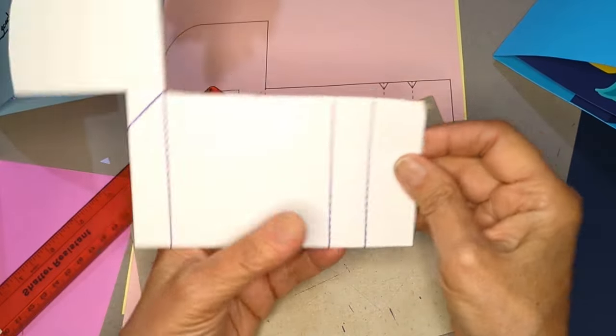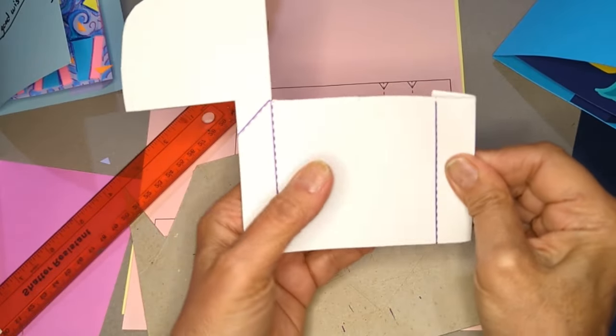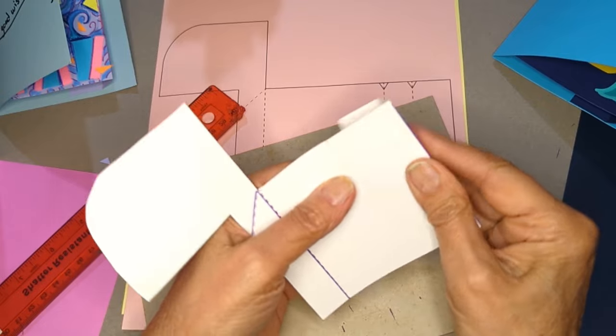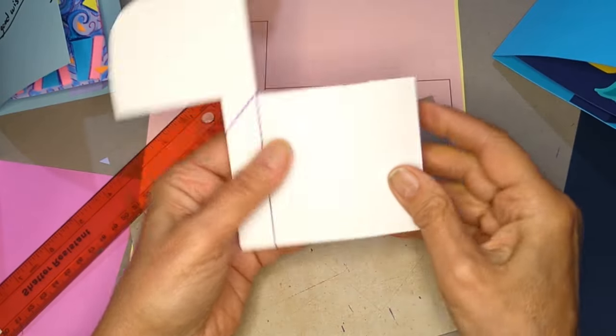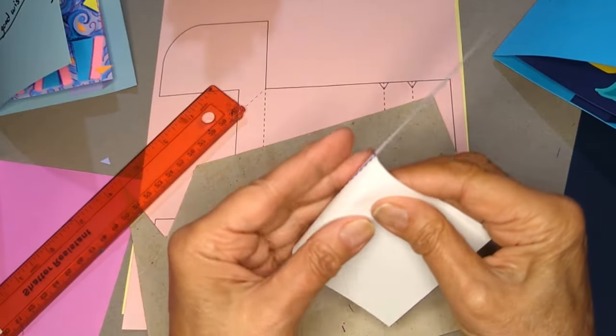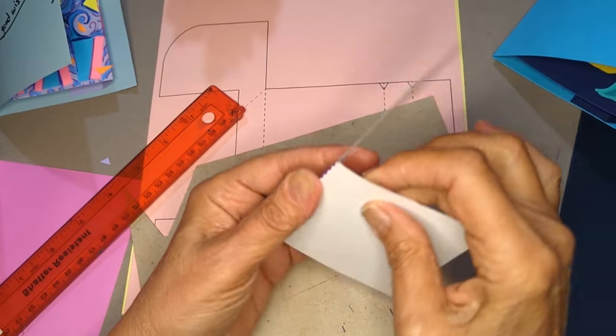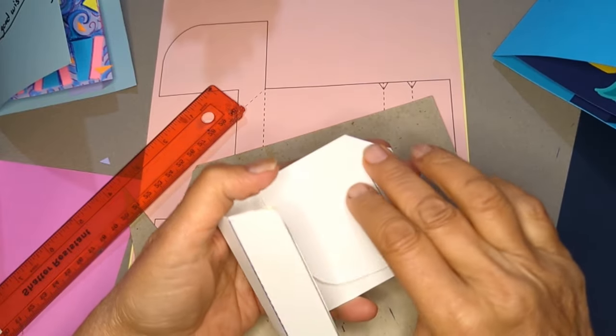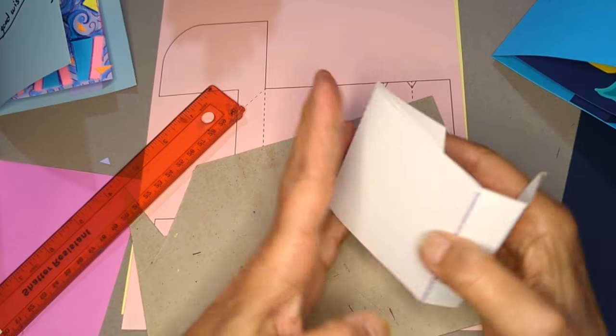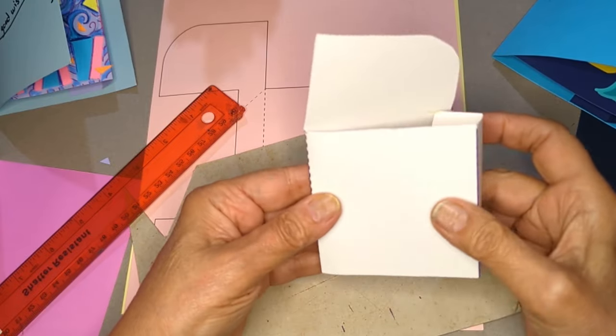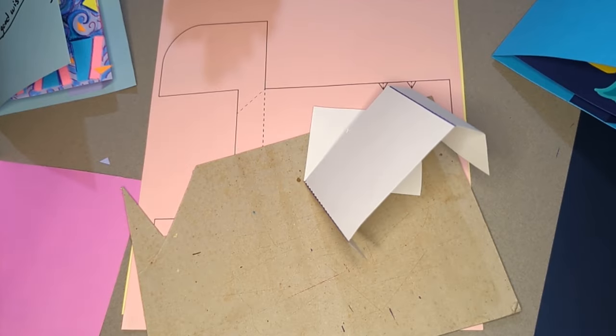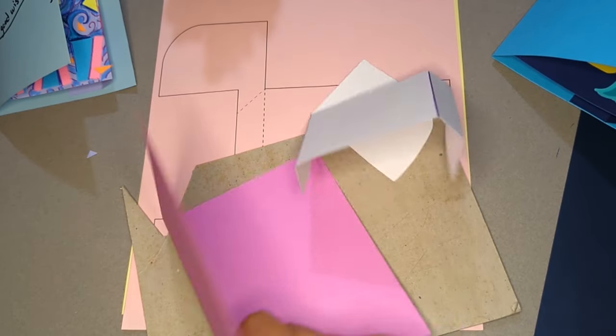Okay so I'm going to make these all into mountain folds and this last one also becomes a mountain fold. You can see it's going to be hiding behind there. That all I hope is pretty straightforward looking.